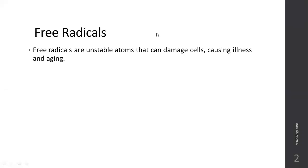Free radicals are unstable atoms that can actually damage your healthy cells and tissues, causing illness and aging. If free radicals are more in number, the aging process will be accelerated, along with inflammatory processes, illness, and disease conditions.